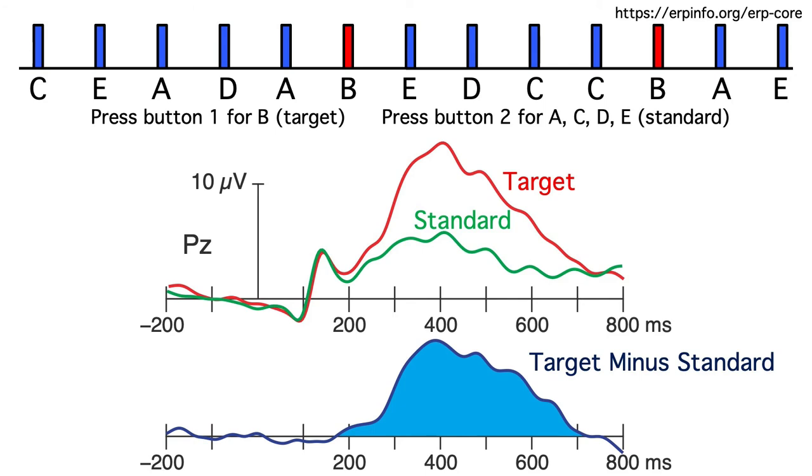The answer is to make a target minus standard difference wave. We literally just take the target voltage at a given time point and subtract the standard voltage. This gives us just the probability sensitive activity, which will mainly be the P3 wave.